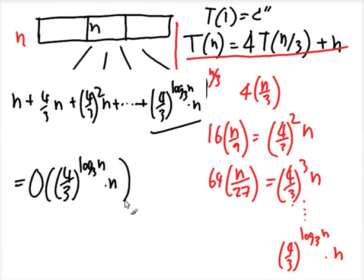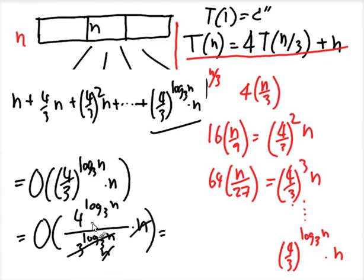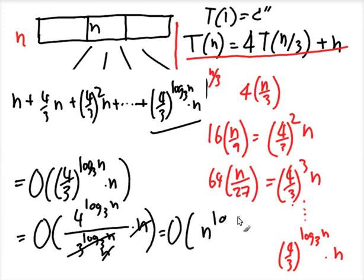What is (4/3)^(log_3 N) · N? We can rewrite: 4 equals 2^(log_2 4), and using the same switching trick, (4/3)^(log_3 N) · N simplifies to N^(log_3 4). So the running time is O(N^(log_3 4)).